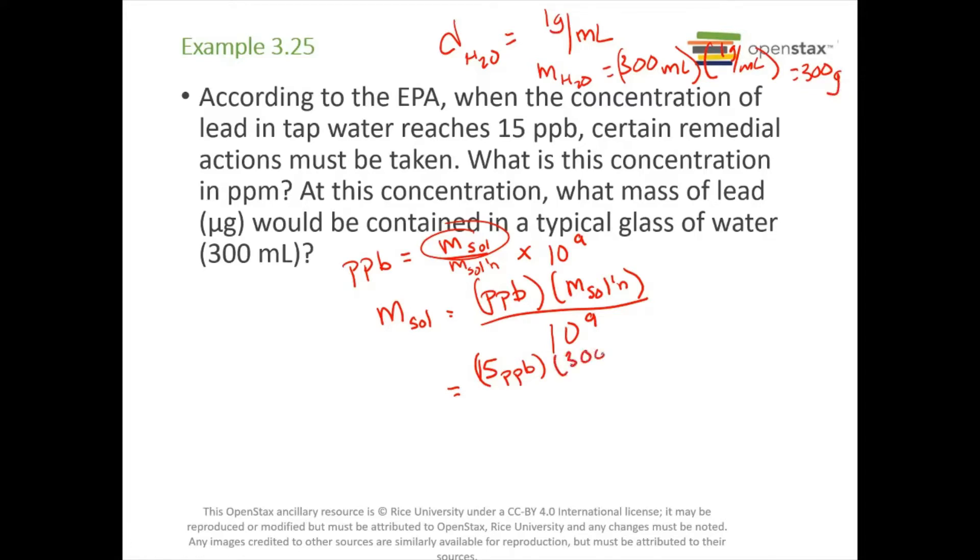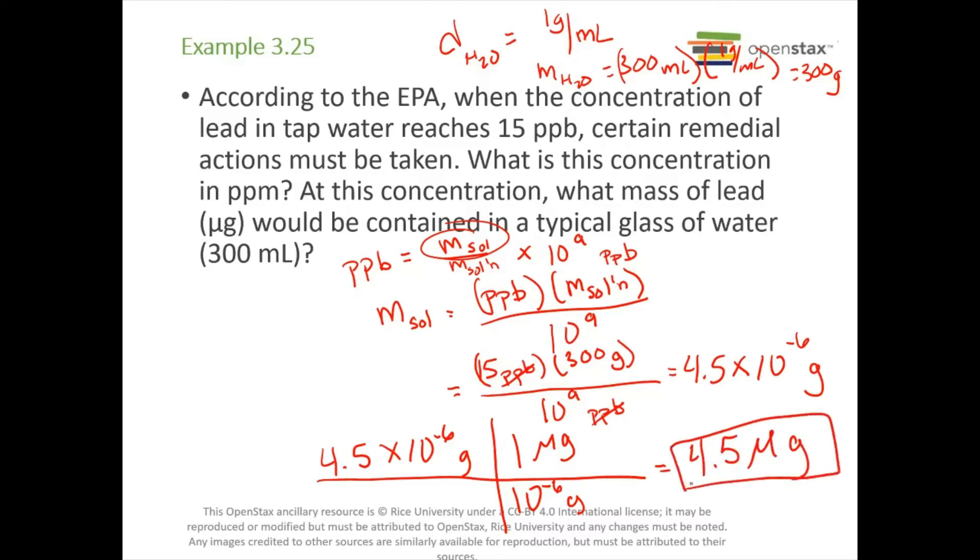Now we have 15 PPB times 300 grams, divided by 10 to the ninth PPB. PPBs cancel, and we're left with grams. We get 4.5 times 10 to the negative sixth grams. That's a tiny number. Now we want to go to micrograms: 4.5 times 10 to the negative sixth grams. There's one microgram per every 10 to the negative sixth grams. This gives us 4.5 micrograms. Tiny, tiny, tiny bit of lead. Big, big, big problem.